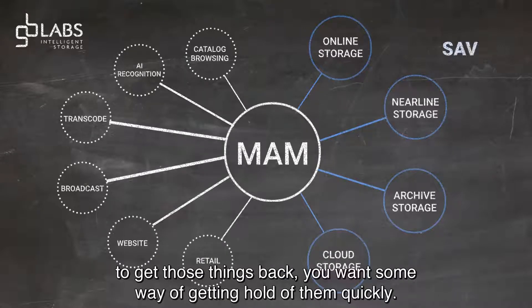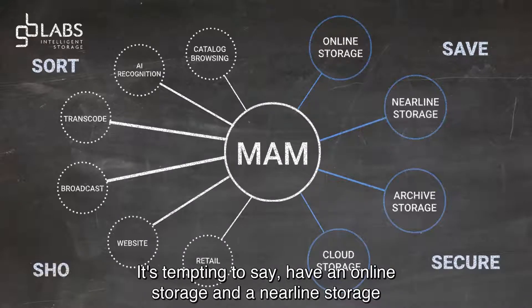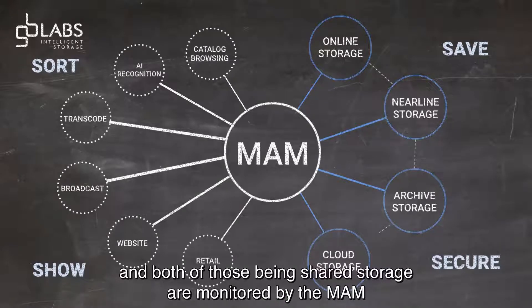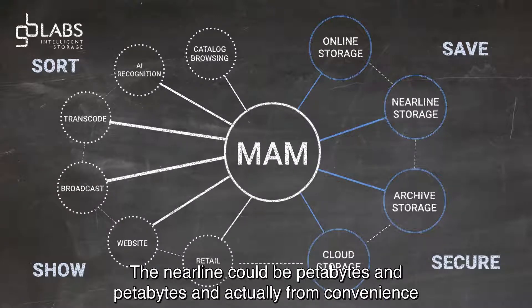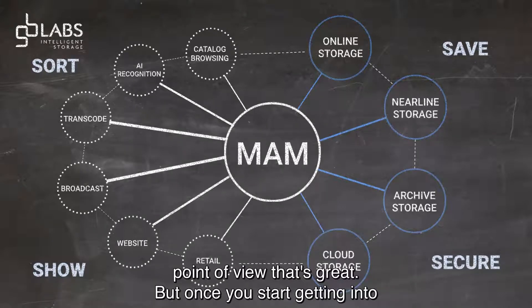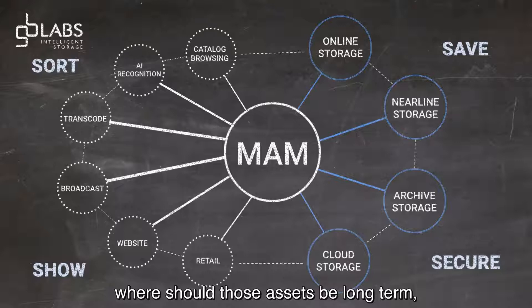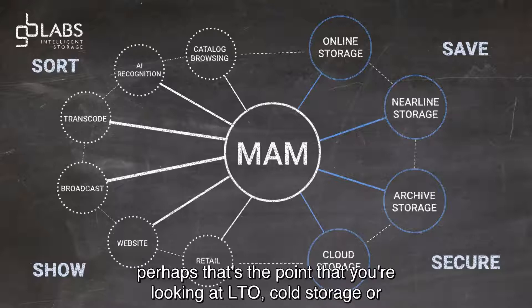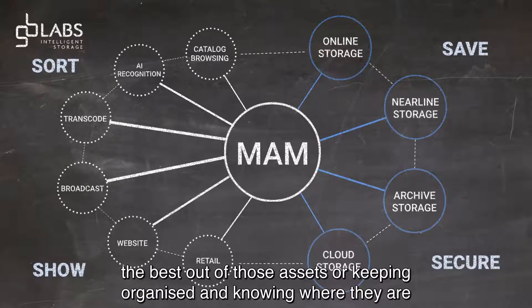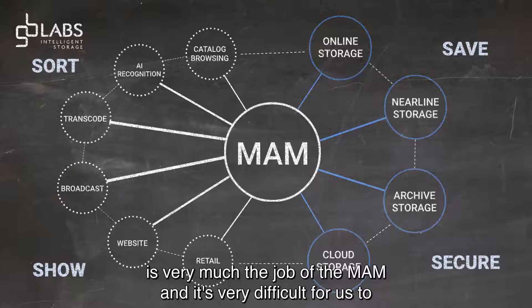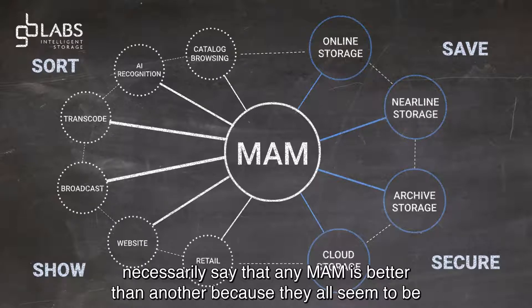At the point that you want an asset, you don't really want to be sitting around for a week or even a couple of days to get things back — you want some way of getting hold of them quickly. It's tempting to have online storage and near-line storage, both being shared storage monitored by the MAM. The MAM knows what's on the online and what's on the near-line; the near-line could be petabytes and petabytes, which is great for convenience. But at some point you're looking at LTO cold storage or even cloud solutions for the long term. Getting the best out of those assets and keeping organized is very much the job of the MAM.